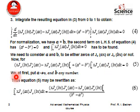What we do, at first we put a goes to 0, but b is not going to 0 and give it any number. Accordingly, equation 5 can be rewritten in this form.